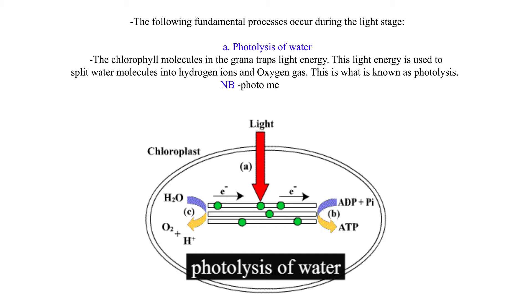Note: Photo means light. The oxygen gas produced is released into the atmosphere as a byproduct or utilized by the plant for respiration.